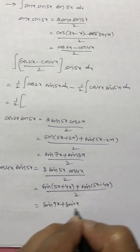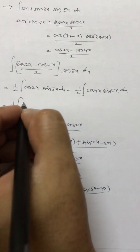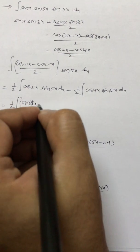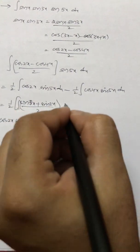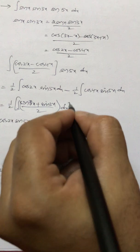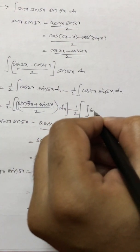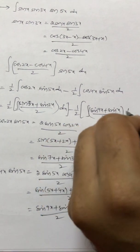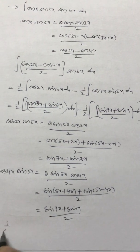If I substitute it here, it will be integral of sin 7x plus sin 3x minus sin 9x plus sin x by 2 dx. So if I evaluate them, one by four into integral of sin 7x plus sin 3x minus sin 9x minus sin x.